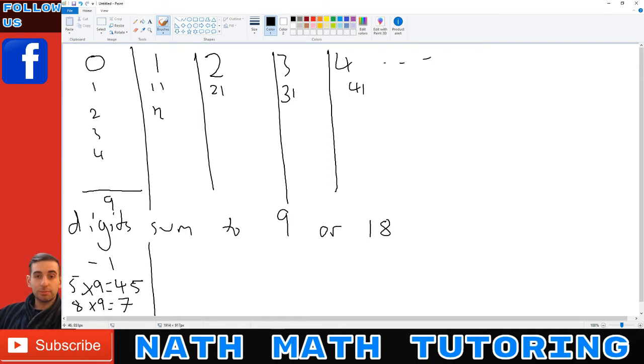Let's just do another example: 8 times 9. The first digit has to be 7, so 1 less than the digit, and then the second digit has to add up to 9. So 7 plus 2 equals 9, so 8 times 9 is 72. So even if you don't remember these ones, you can still work it out using this pattern.